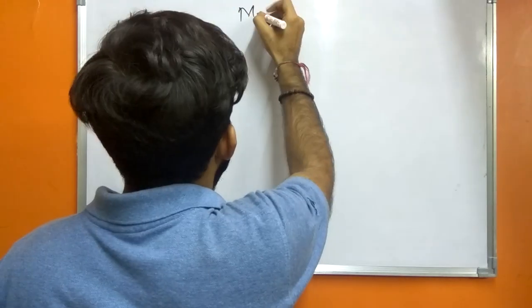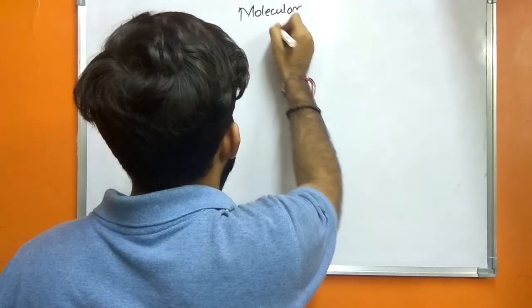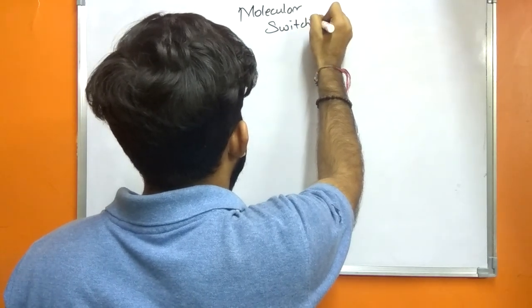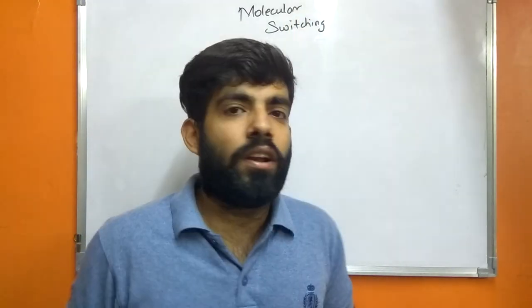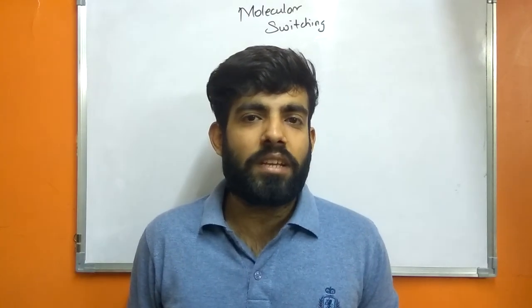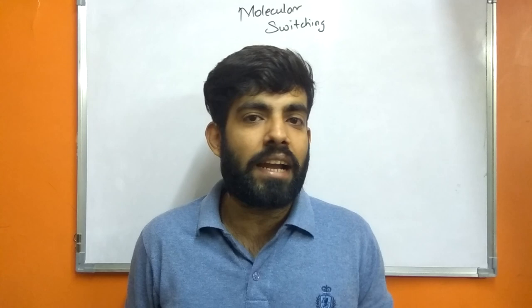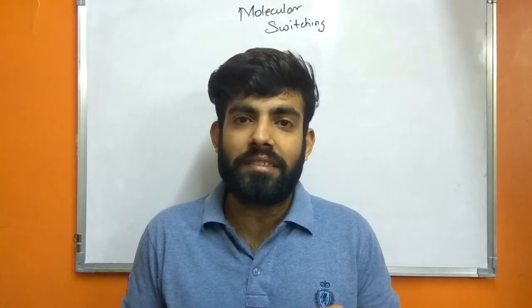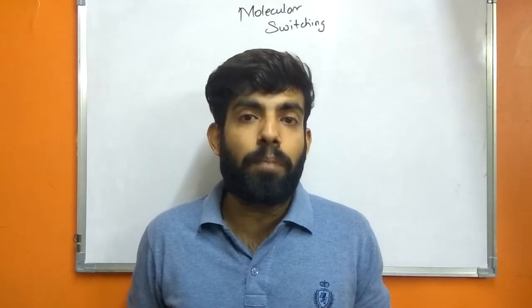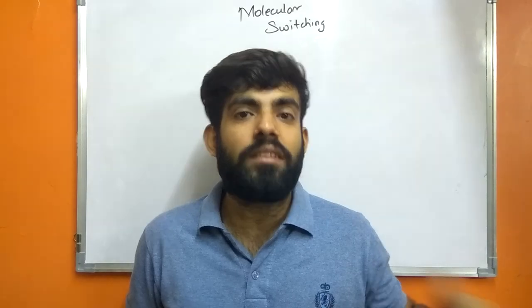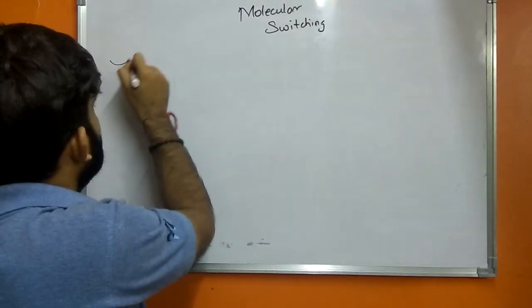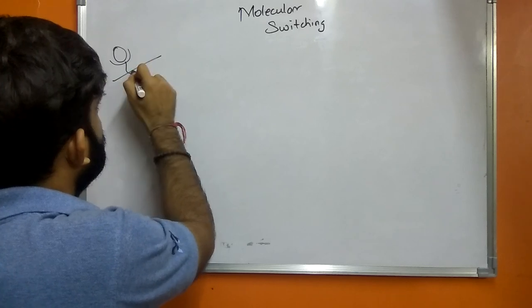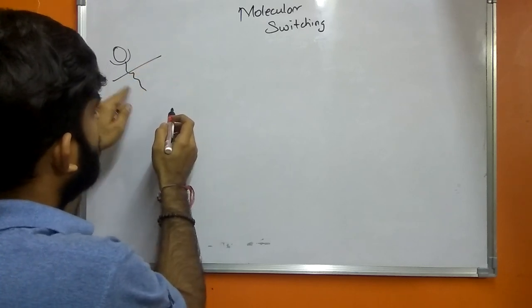Hello everyone, I am Sadhar Banushali and I am going to talk about molecular switching. In the previous video we studied about the cascade of reactions which involve the activation and deactivation of proteins. When a receptor gets activated, it transmits the signal through the plasma membrane which activates a protein to relay the signal to another type of protein. When the receptor gets activated by a ligand, it transmits the message inside the cell.